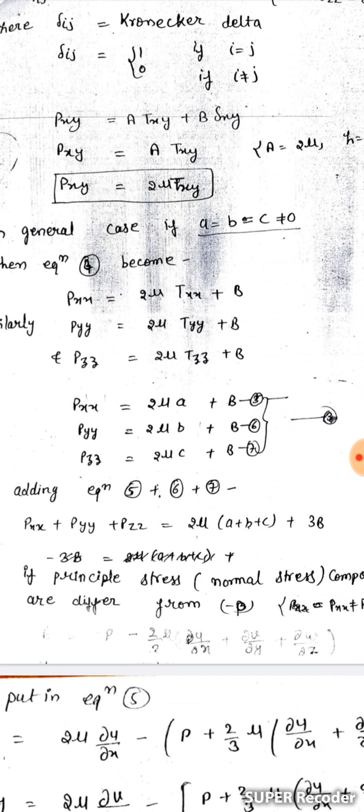In the general case where a, b, and c are not equal to zero, equation 4 becomes: Pxx = 2*mu*Txx + B; Pyy = 2*mu*Tyy + B; and Pzz = 2*mu*Tzz + B. So Pxx = 2*mu*a + B (equation 5), Pyy = 2*mu*b + B (equation 6), and Pzz = 2*mu*c + B (equation 7).